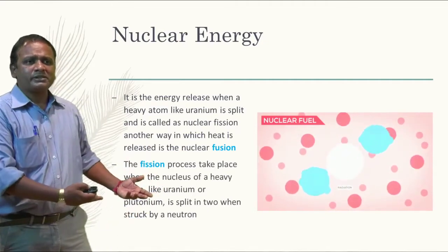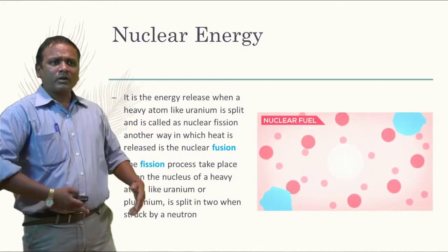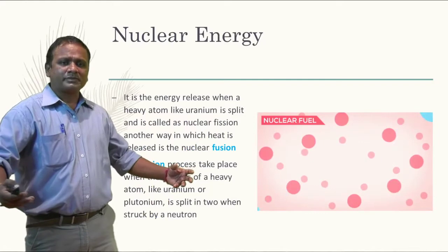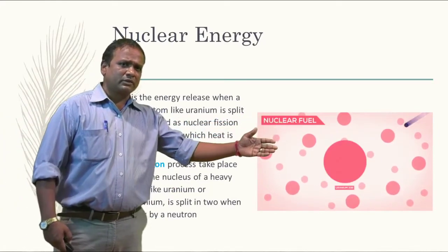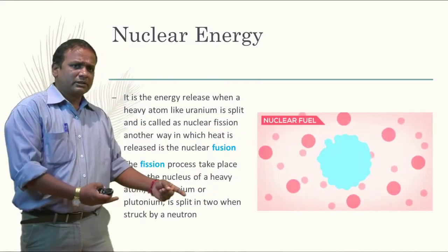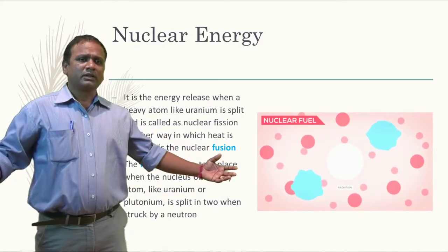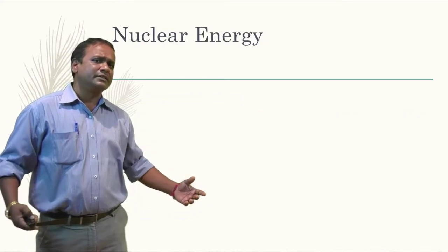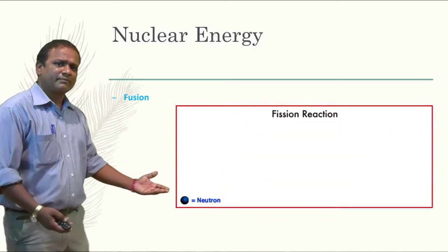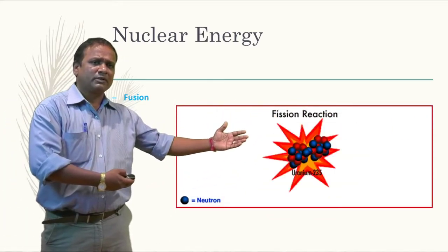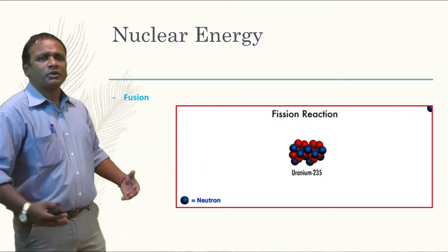The fusion process takes place when the nucleus of a heavy atom like uranium or plutonium is split into two when struck by a neutron, as you can see. It has been struck by a neutron right now. When it struck the neutron, the uranium or plutonium is split into two, releasing an enormous amount of energy. You can see the split of uranium. Now when it splits up, it gives an enormous amount of energy.